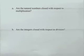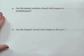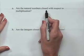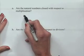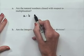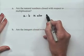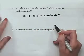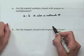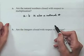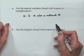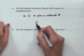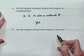Now we have questions about the closure property. Part A: are the natural numbers closed with respect to multiplication? For a set to be closed under multiplication, taking any two natural numbers and multiplying them must always produce a natural number as the result. It turns out that multiplying any two natural numbers always yields a natural number, so yes, the natural numbers are closed with respect to multiplication.